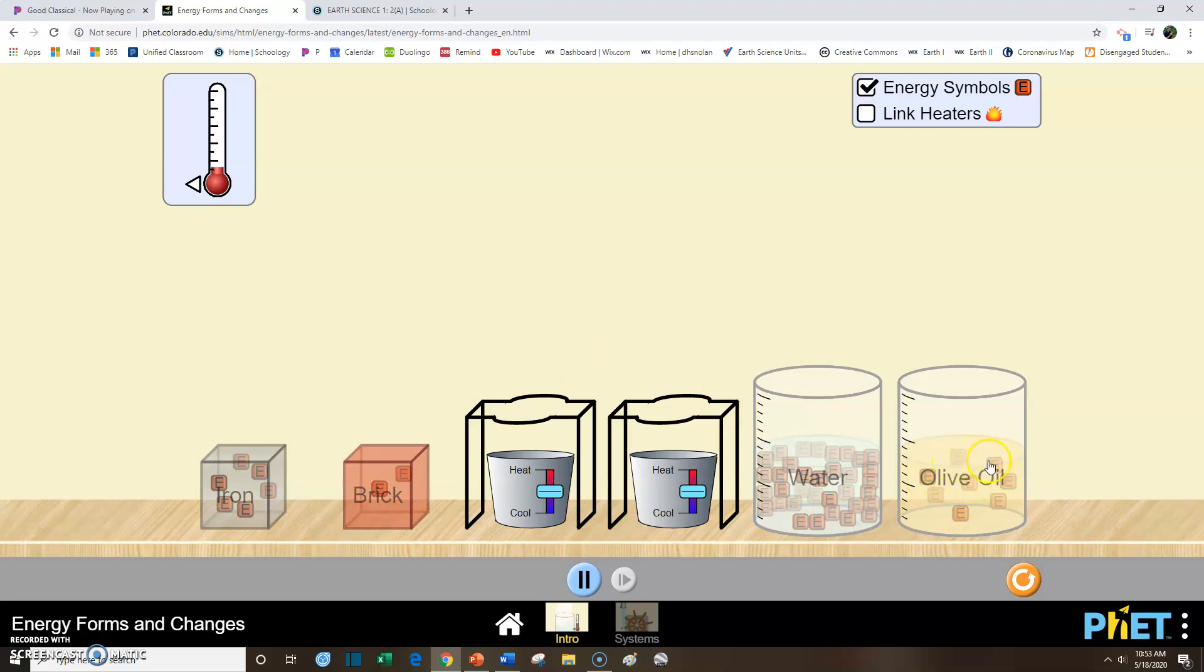Well, each little E is this sort of arbitrary unit of energy, of heat energy, thermal energy. So we can tell that these different substances don't have the same amount of energy in them, even though they're all the same temperature. If you take the thermometers and if you check them, they're all room temperature. They're all the same. But they have different amounts of energy in them. That's sort of interesting that we've got our water, our olive oil, brick, and iron. They all contain different amounts of energy.